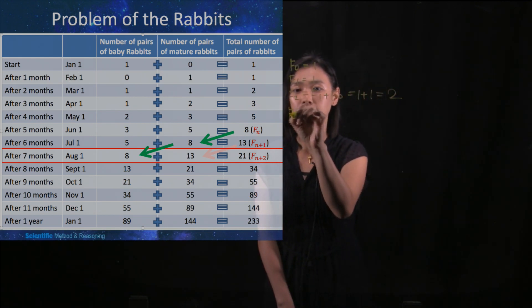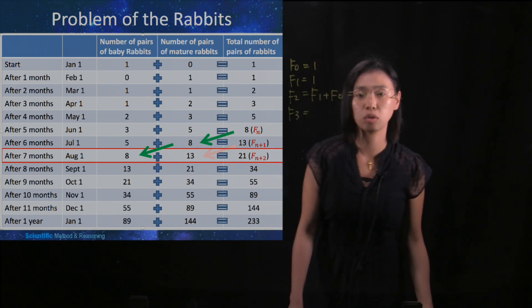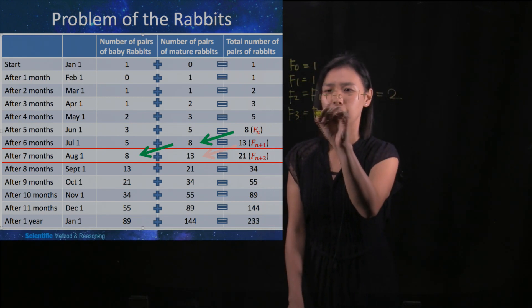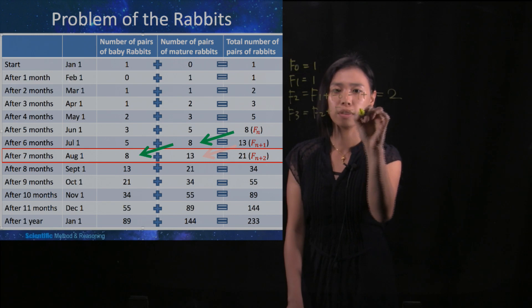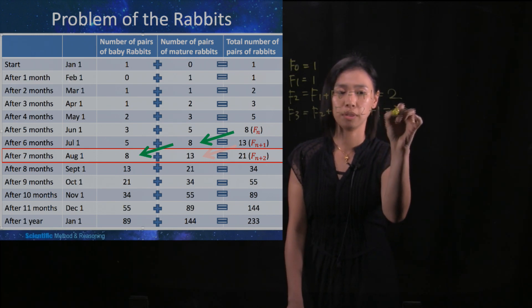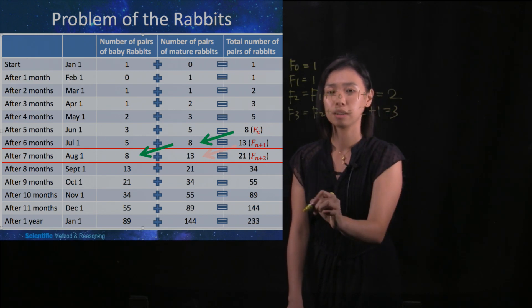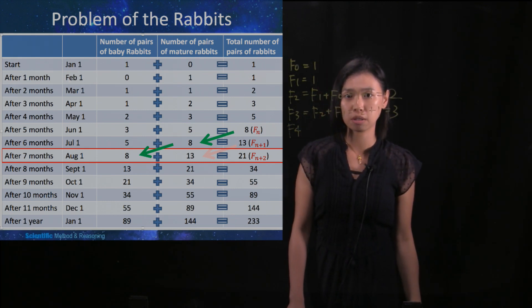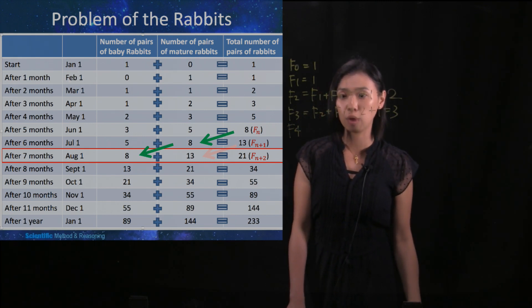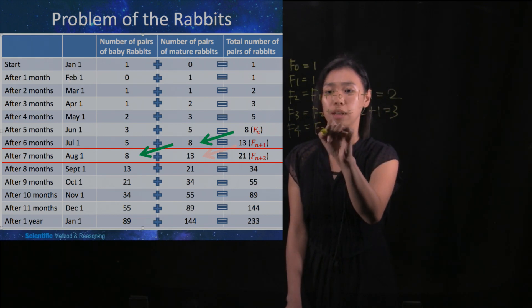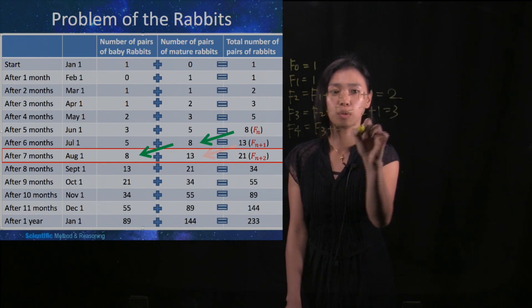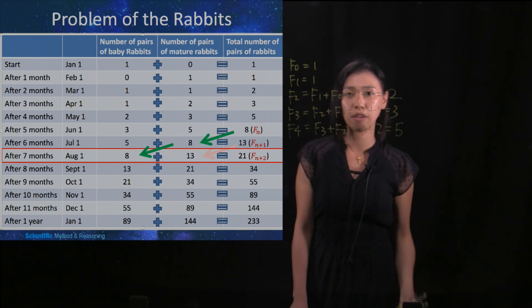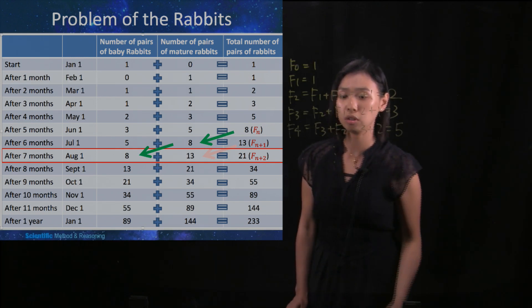We also notice that F3, which is the total number of pairs of rabbits after three months, is F2 plus F1, which is 2 plus 1, is 3. If we denote F4 to be the total number of pairs of rabbits after four months, it would be F3 plus F2, which is 3 plus 2, and it is 5. So this process will continue.